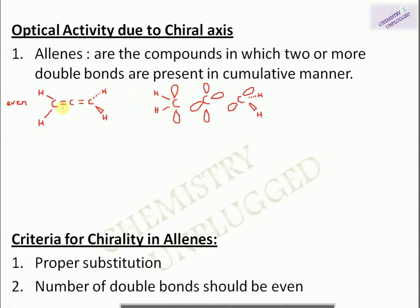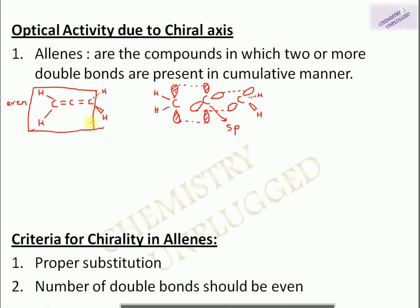We need to understand double bond formation in allenes. The p orbitals on the terminal carbons lying in the plane of the paper overlap with p orbitals of the central carbon also in the plane, forming one pi bond. The other pi bond is formed by overlap of p orbitals coming out of the plane. The central carbon is therefore sp hybridized, being associated with two pi bonds. A vertical plane can divide this allene into two equal halves.